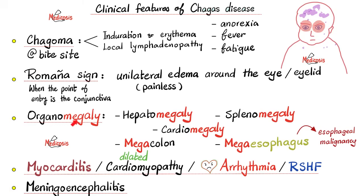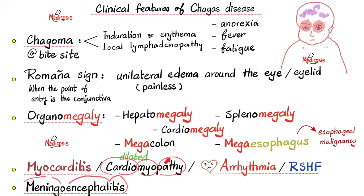Organomegaly — big organs: hepatomegaly (big liver), splenomegaly (big spleen), cardiomegaly (big heart), megacolon (big colon), megaesophagus (big esophagus). This megaesophagus increases the risk of esophageal cancer. In the heart: cardiomegaly, myocarditis, dilated cardiomyopathy, arrhythmia, and right-sided heart failure. In the nervous system: meningoencephalitis — inflammation of the brain and the meninges. Cardiomyopathy breaks down as: 'pathy' means pathology, 'myo' means muscle — pathology of the heart muscle. Myocarditis means inflammation of the heart muscle.